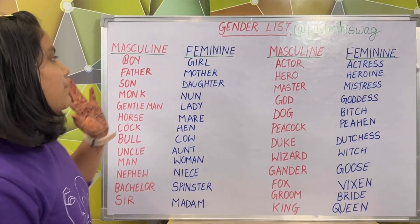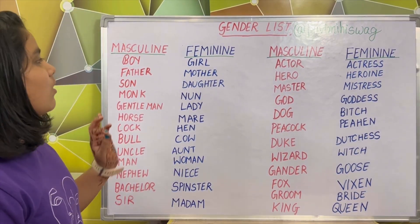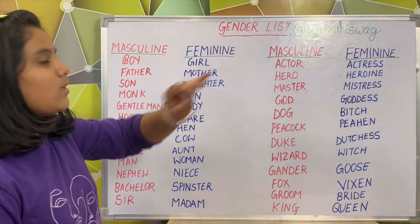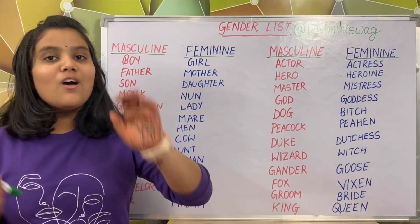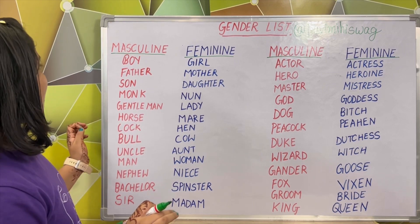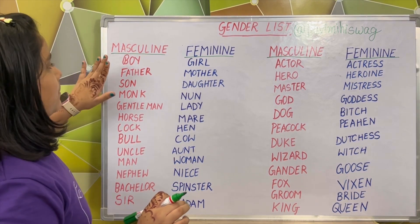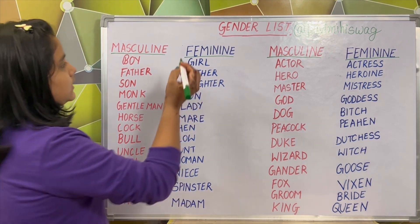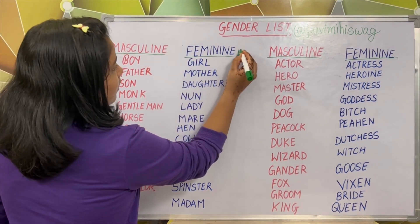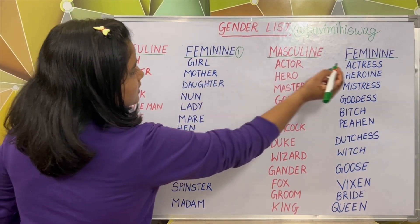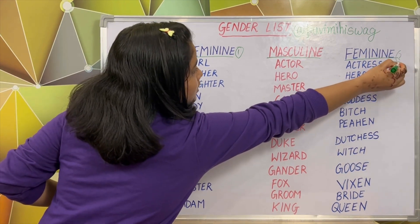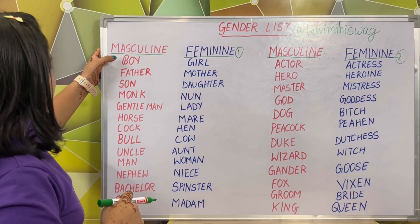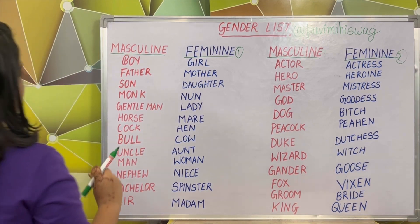Hello friends, in the previous video we studied about the different kinds of gender. But in this video lecture, we will discuss about some of the examples of the masculine gender and the feminine gender. So first we will discuss about the first column and then we will discuss about the second column. Let's see the examples which are given to us.